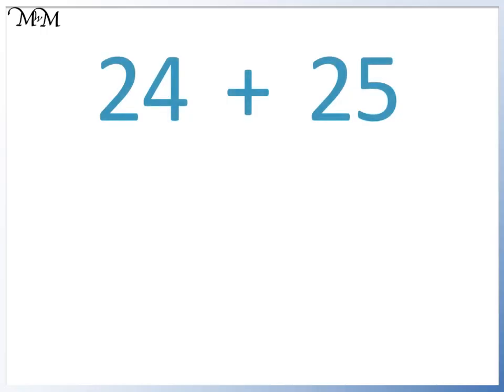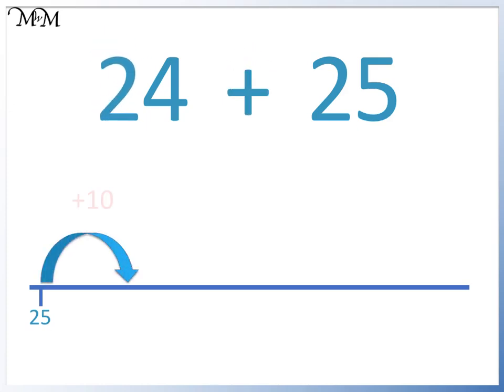Here is 24 plus 25. 25 is the bigger number, so we start with 25. We will add 2 tens, 1 jump of 10 to 35, and a second jump of 10 to 45.